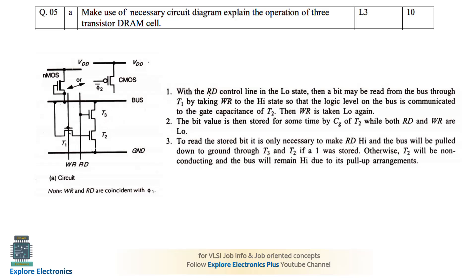T1, T2, and T3 are connected such that T1's gate is connected to the write signal and T3 is connected to the read signal. T2's gate is connected to the output of T1, where the gate capacitance of T2 holds the charge — meaning the memory storage device here is basically T2.